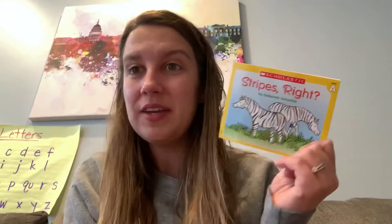Nice work, kindergarten. Let's think in our brains — what is this book mostly about? Let's look at the title: Stripes. All the things that have stripes, and a ladybug who doesn't have stripes. Now I want you to go into your notebook, write a sentence, then take a picture and send it to your teacher. Awesome job, kindergarteners. Bye.